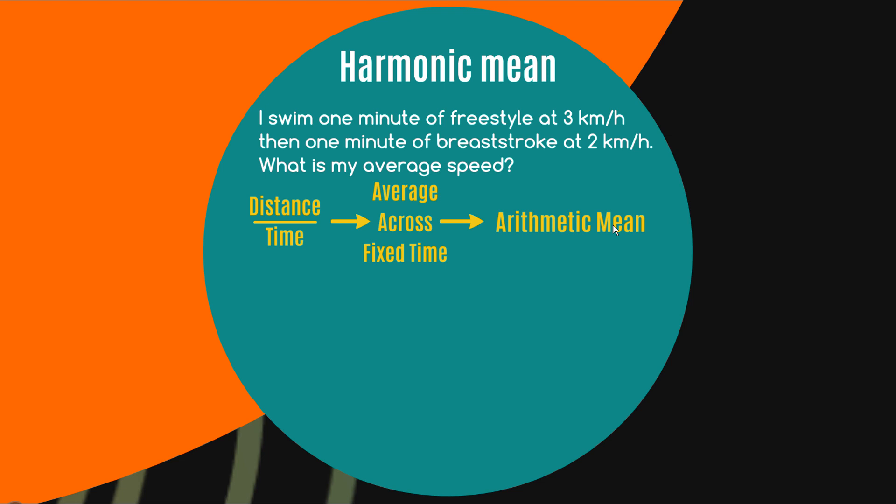So when you've got a rate of distance over time and you're finding the average across fixed time then the answer can be provided by finding the arithmetic mean just simply adding things up and dividing by n which in this case is two. But what if I asked you this I swim one lap of freestyle at three kilometers an hour and then one lap of breaststroke at two kilometers an hour what's my average speed now? Well this is no longer just an arithmetic mean and hopefully you can see why clearly my lap that I do at three kilometers an hour will be done faster than my lap that I do at two kilometers an hour so if you look at the total time I'm spending swimming here I'm spending more time swimming at two kilometers an hour than I am swimming at three kilometers an hour.